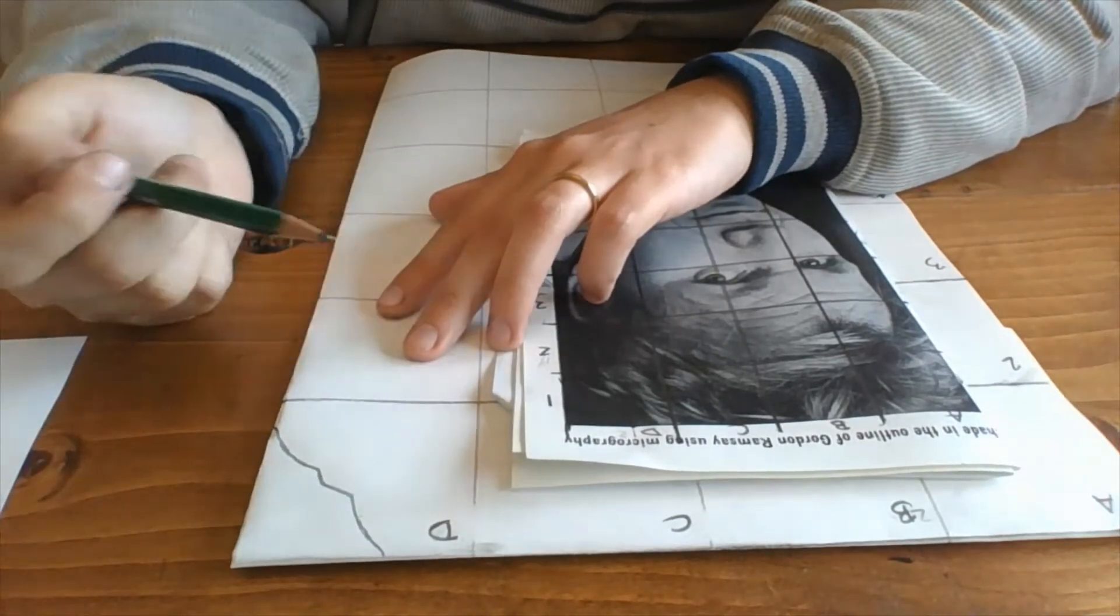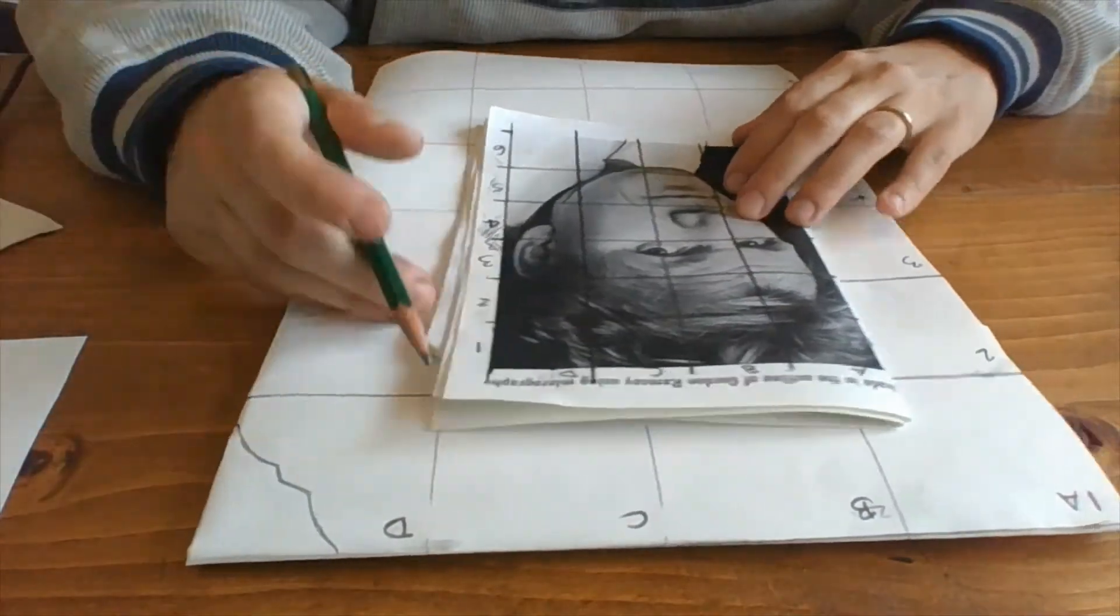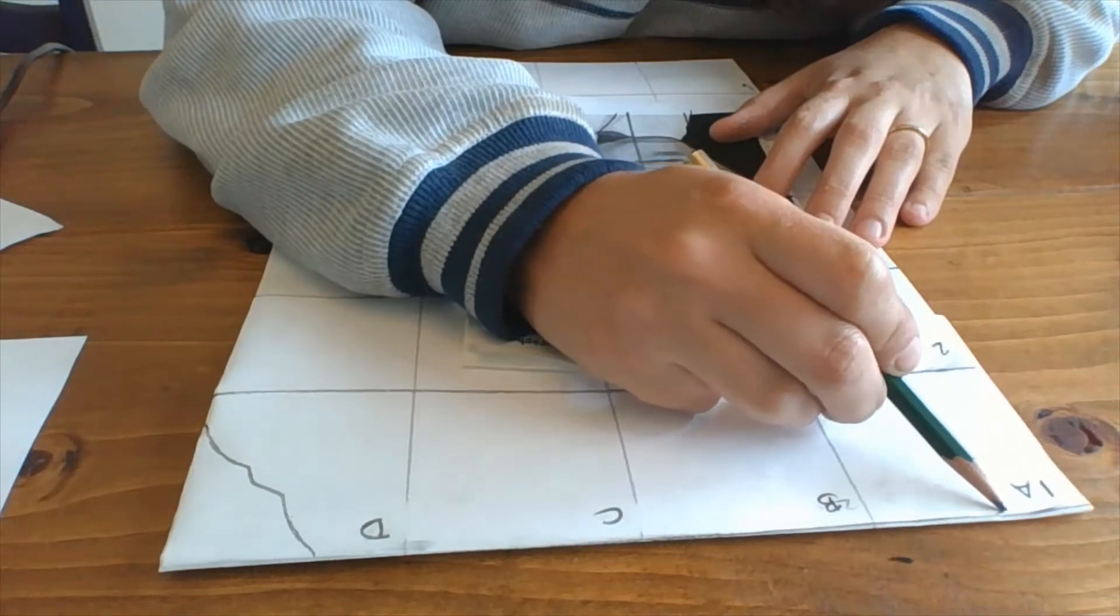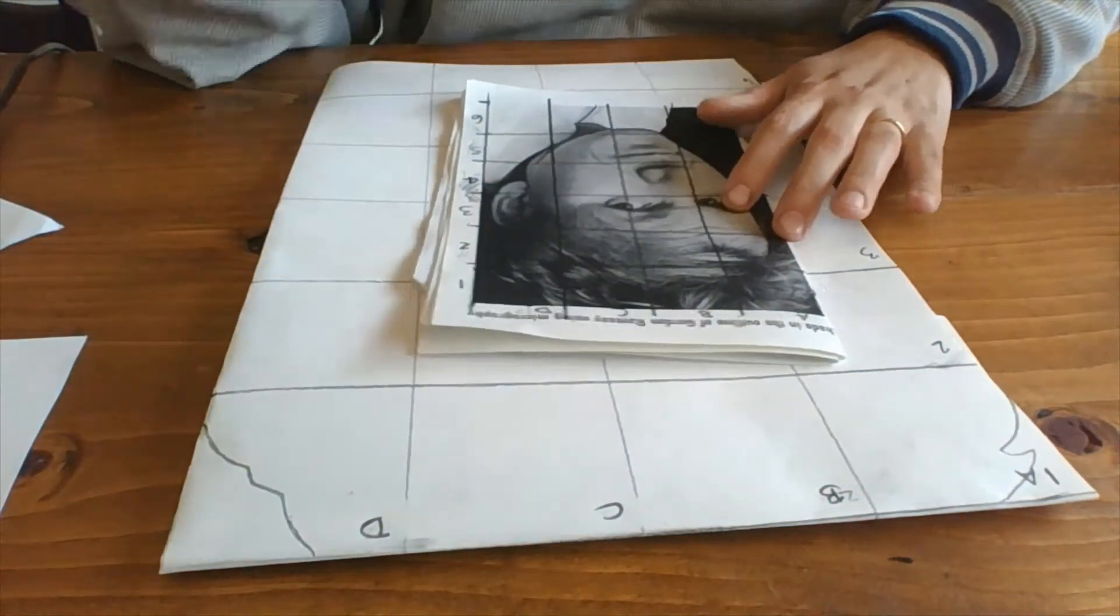So that looks like the edge of his hair to me. And that kind of covers that whole area. I could go ahead and maybe do the other edge of his hair over in 1A. All right, there's the edge of his hair.